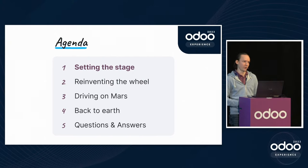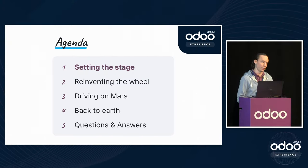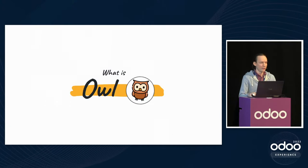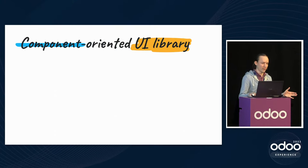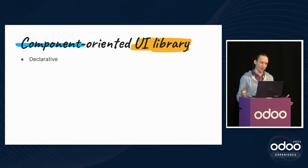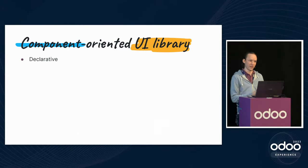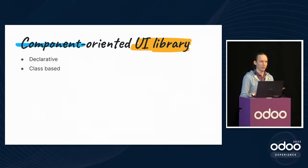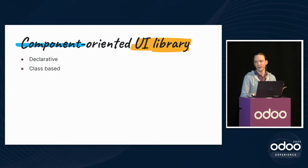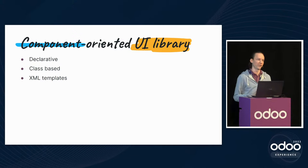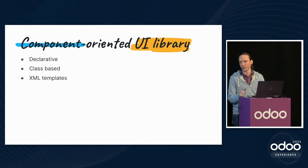Since 2021 I've been one of the core contributors and maintainers of OWL, which is our UI library that we built instead of using React. OWL is a component-oriented UI library, much like React. It's declarative, meaning you describe what you want the UI to look like at any given point, and the library is responsible for synchronizing the state of your application with the state of the UI.